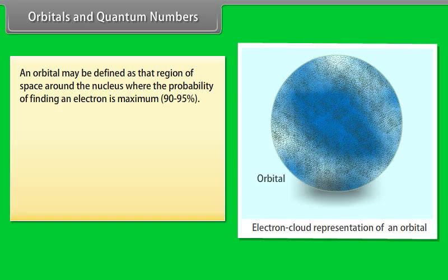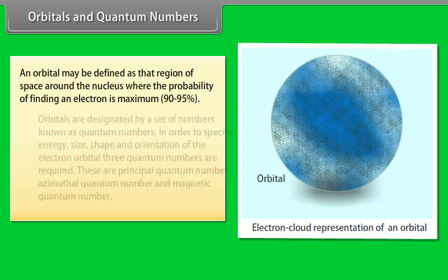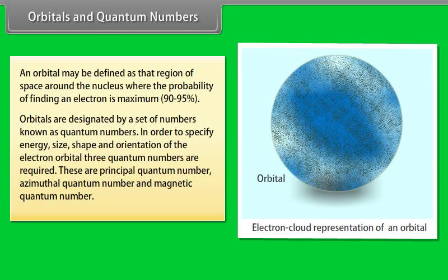Orbitals and Quantum Numbers: An orbital may be defined as that region of space around the nucleus where the probability of finding an electron is maximum. Orbitals are designated by a set of numbers known as quantum numbers. In order to specify the energy, size, shape, and orientation of the electron orbital, three quantum numbers are required: the Principal Quantum Number, the Azimuthal Quantum Number, and the Magnetic Quantum Number.